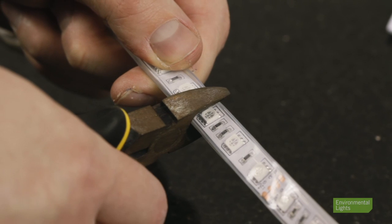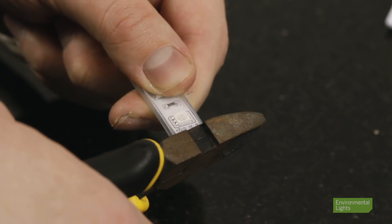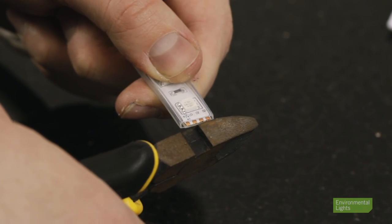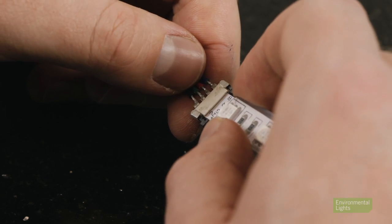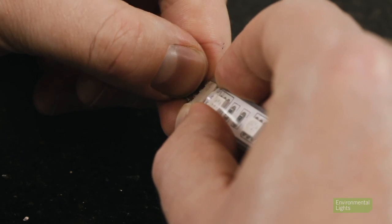First, use a sharp wire cutter to cut the LED strip light on a cut line. Do not cut between the lines. Next, slide the connector on and push the connector together to lock it to the strip.